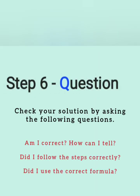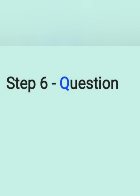For step six, our last question, we're checking ourselves to ask ourselves if we are correct. You can ask the following questions to check yourself: Am I correct? How can I tell? Did I follow the steps carefully? Did I use the correct formula? All these questions will enable us to be sure of our answer, especially if we have to do a presentation or submit our work.